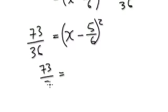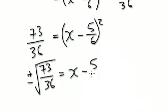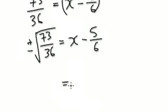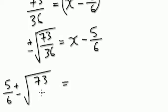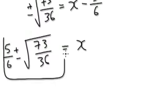So this will be square root of 73 over 36. You're going to get two solutions here. x minus 5 over 6. Okay, and then what? And then you add this fraction to both sides. So this would be 5 over 6 plus or minus square root of 73 over 36. So x equals. So the two solutions above are these here.